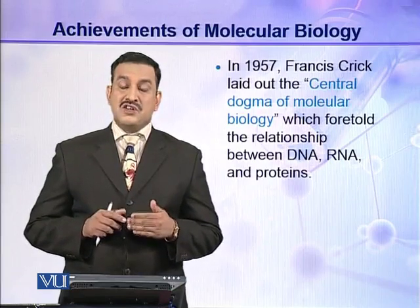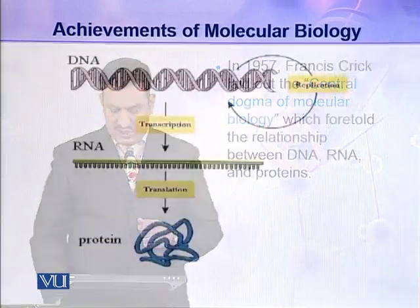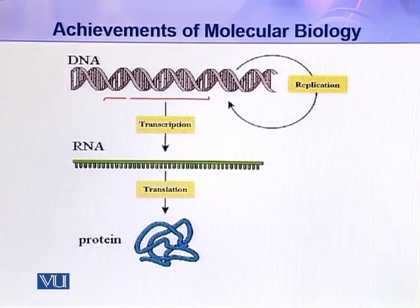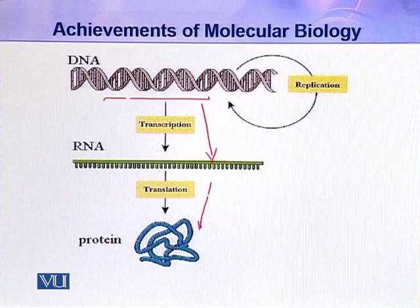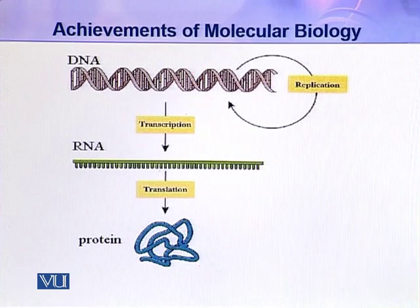The central dogma describes how DNA transfers its information to RNA, and then this information is translated in the form of proteins. As shown in the illustration, the information in the DNA molecule is copied to the mRNA molecule, then translated from mRNA to proteins. This information is carried from the nucleus and transmitted to the site of protein synthesis.